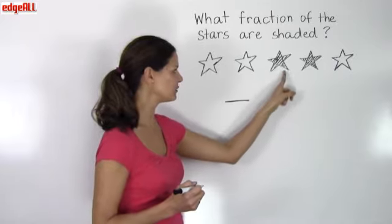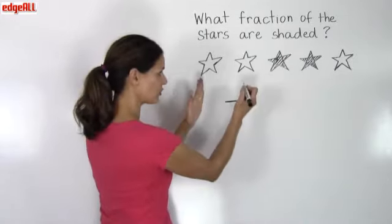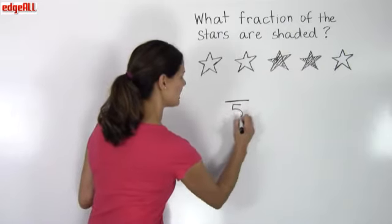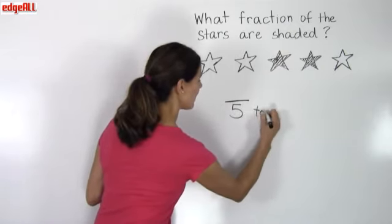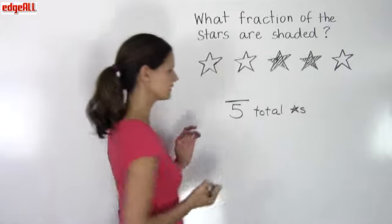So our denominator will show the total number of stars in the whole group. So in this case, we have one, two, three, four, five total stars in our whole group, which makes our denominator five.